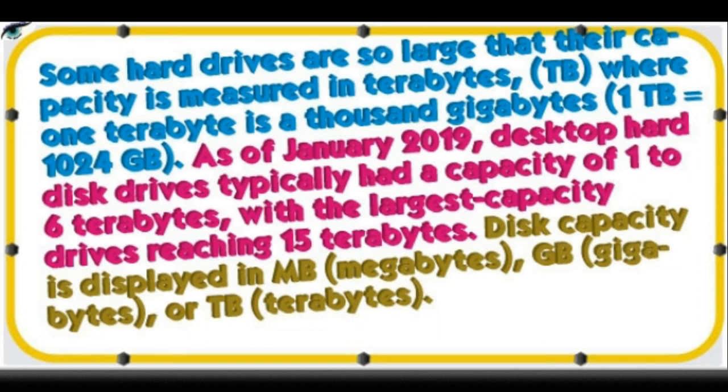Hard disk capacity is measured in terabytes (TB), where one terabyte equals 1024 gigabytes. As of January 2019, desktop hard disk drives typically had a capacity of 1 to 6 terabytes, with the largest capacity drives reaching 15 terabytes.